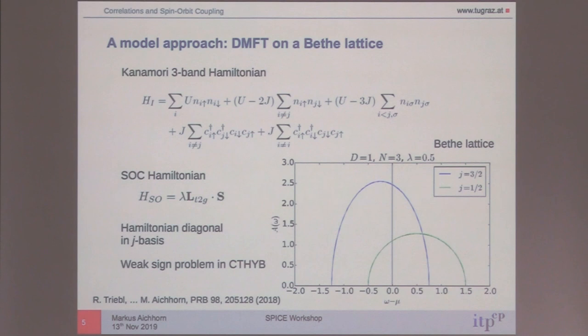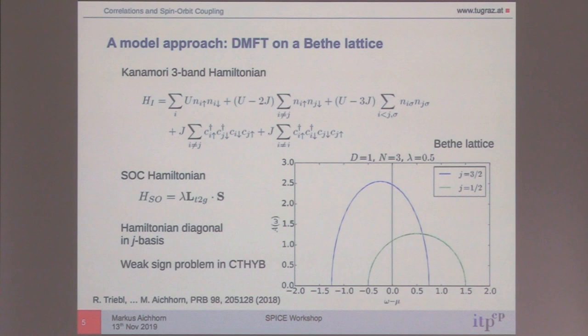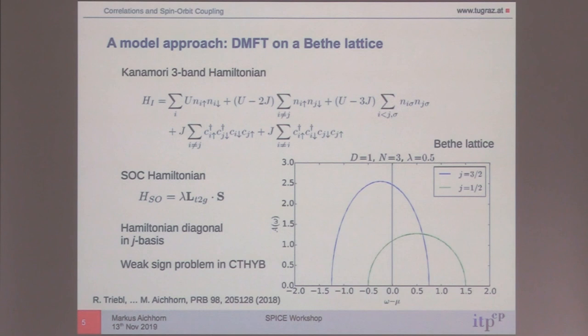An audience member asks: when you neglect the mixing term, that's actually true only when spin-orbit coupling is larger than the Hund's coupling, because the mixing is proportional to Hund's coupling — so you're effectively neglecting Hund's coupling there. The speaker responds: yes, but we never neglect this in the actual calculation. It's only neglected here to make this analytical argument. In the calculation, no term is ever neglected.